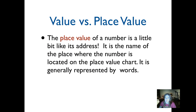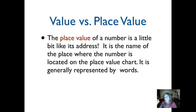The place value of a number is a little bit like its address. Think about where your house is — there's a number on your house. It might be 303 Oak Street. That's the name of where your house is located. The place value position is also the number's address — it's where it's located. It doesn't include the actual number like one or three or five. It's just the place value position name — the name of the place where the number's located on the place value chart.